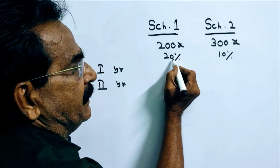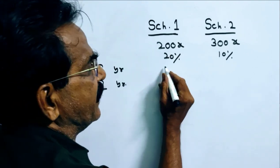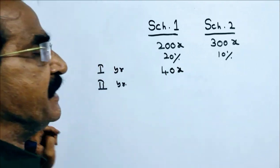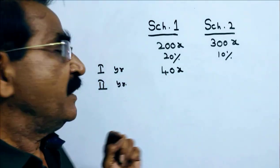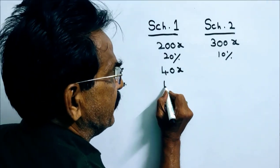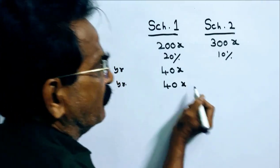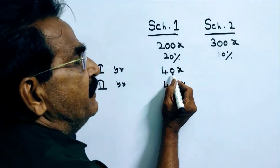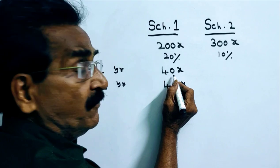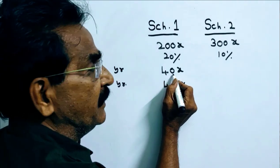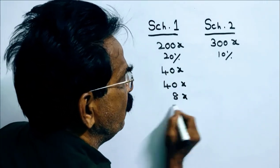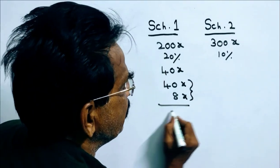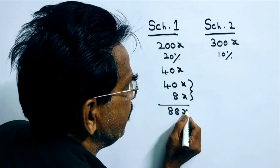See friends, here 20%, 200x. 20% on 200x is equal to 40x. This is the interest received by the man for first year. And second year also he gets the same interest. Plus he gets interest on interest. So 20% on 40x, that is 8x. So this is the interest for the second year. So total interest he receives 88x.